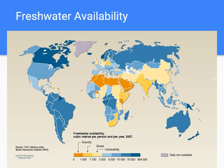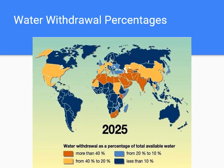This map shows freshwater availability: darker blue means more freshwater available, yellow means vulnerable, darker yellow means under water stress, and orange means water scarcity. There's a belt through the middle where people are more challenged to obtain water. A water withdrawal percentages map shows what percentage of total available water each country is withdrawing — that same middle region is heavily withdrawing from already scarce or stressed water resources.